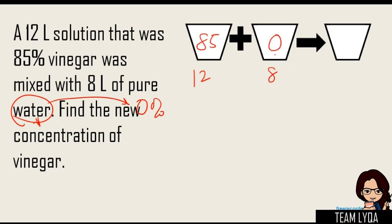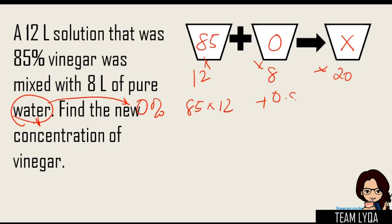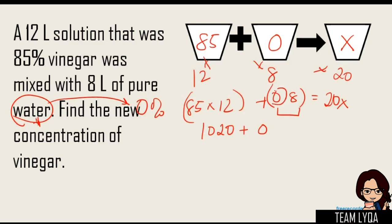So that means you put 0 in for the pure water. Complete the picture: x is what we're looking for, and 12 plus 8 equals 20. Bring it down and multiply everything: 85 times 12 plus 0 times 8 equals 20x. For 85 times 12: 85 times 10 is 850, plus two 85s is 170, so that equals 1,020. Plus 0 — because any number multiplied by 0 is 0 — equals 20x. So 1,020 divided by 20 is 51%.